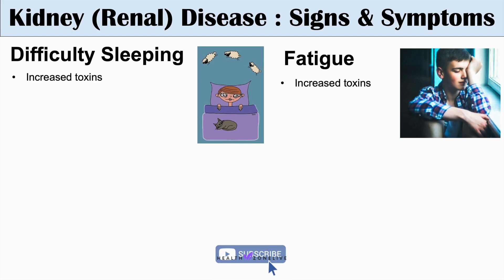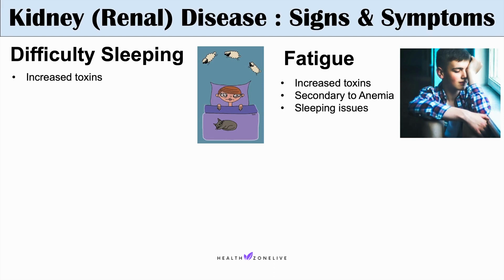The next symptoms are muscle twitching and spasms, often due to electrolyte imbalances. The kidney is very important in balancing electrolytes in the body, and if there are imbalances, this can lead to issues with muscle contractions and spontaneous twitching and spasms. We often see low calcium and high phosphate with kidney disease, which can lead to these muscle issues.